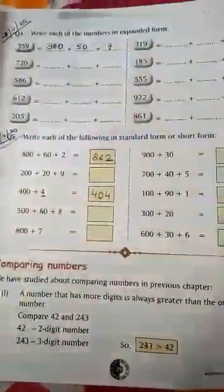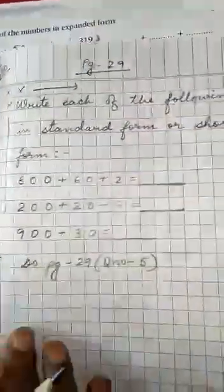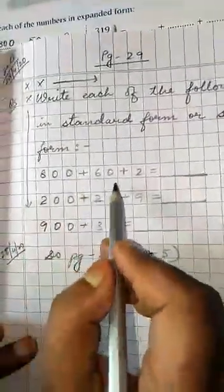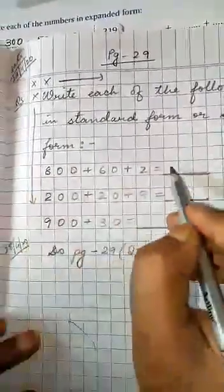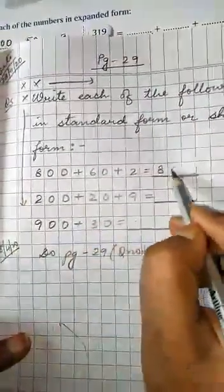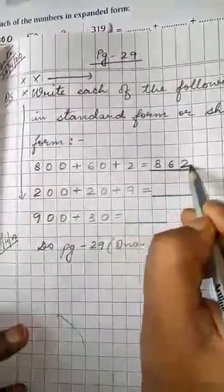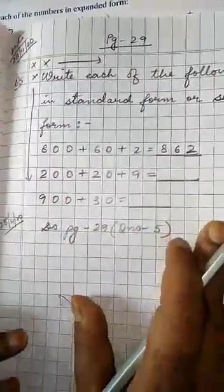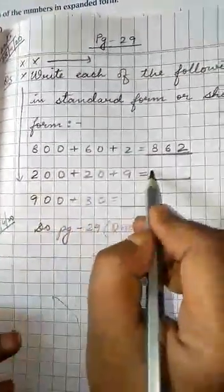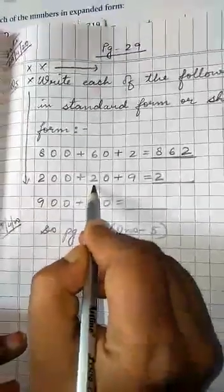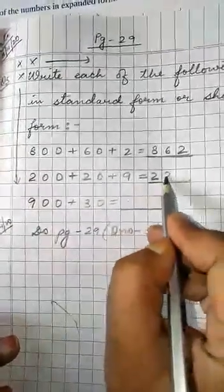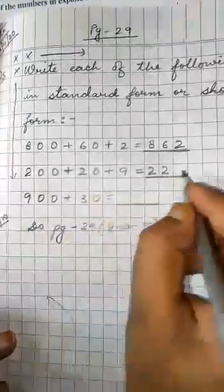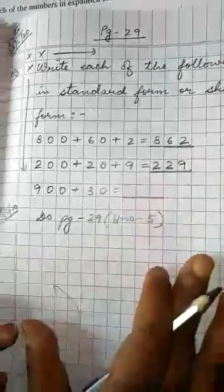Now here you see I have done few questions. 800 plus 60 plus 2: 8 is in hundreds place, 6 is in tens place, and 2 is in ones place, so answer is 862. 200: 2 is in hundreds place. 20 is in tens place, so here you have 2. And 9 is in ones place, so here you have 9.